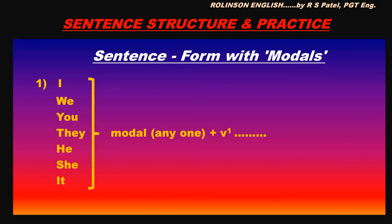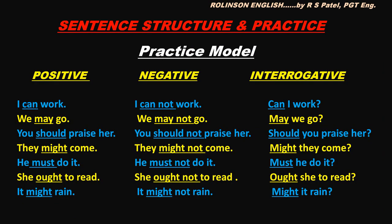Now, as in the case of the first relation, we first learnt the sentence form, practiced it, and then put it for raising the language skills. We have to do the same here. Let us see the sentence forms with modals. First one: with I, we, you, they, he, she and it — take any one of the models followed by the first form of the verb. Let us see it with an example in the practice model.